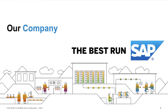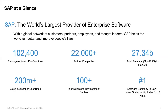I work for SAP, and if you're not aware, it's an extremely large enterprise software company — in fact, the world's largest provider of enterprise software. We have a global network of customers, partners, and employees and thought leaders that help the world run better and improve people's lives. With 102,400 employees, about the size of a small city, we have 22,000 partner companies, 27.34 billion in total revenue, 200 million cloud subscribers, 100-plus innovation and development centers. We are the number one software company in the Dow Jones Sustainability Index for 14 years.